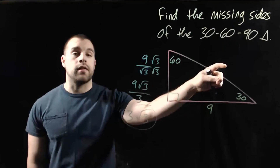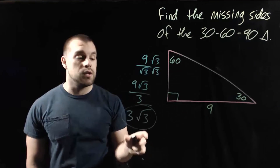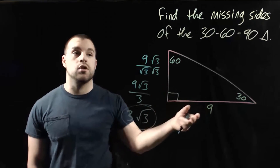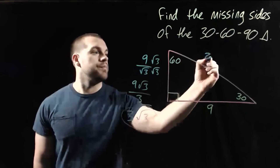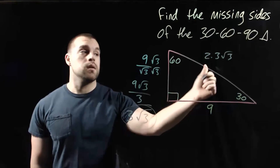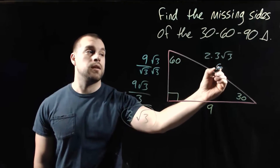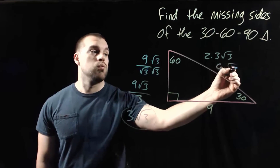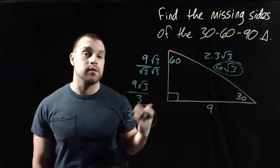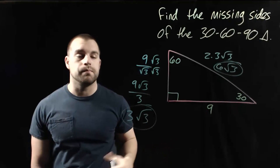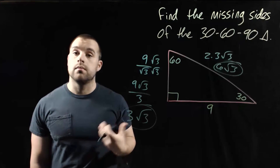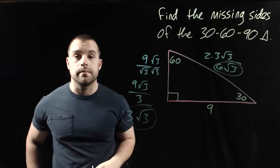Then to find the length of the hypotenuse, we take the short leg times 2. 2 times 3 is 6, so we get 6 root 3. The length of the hypotenuse of this triangle is 6 root 3. That's going to be it for this video — thanks for watching.